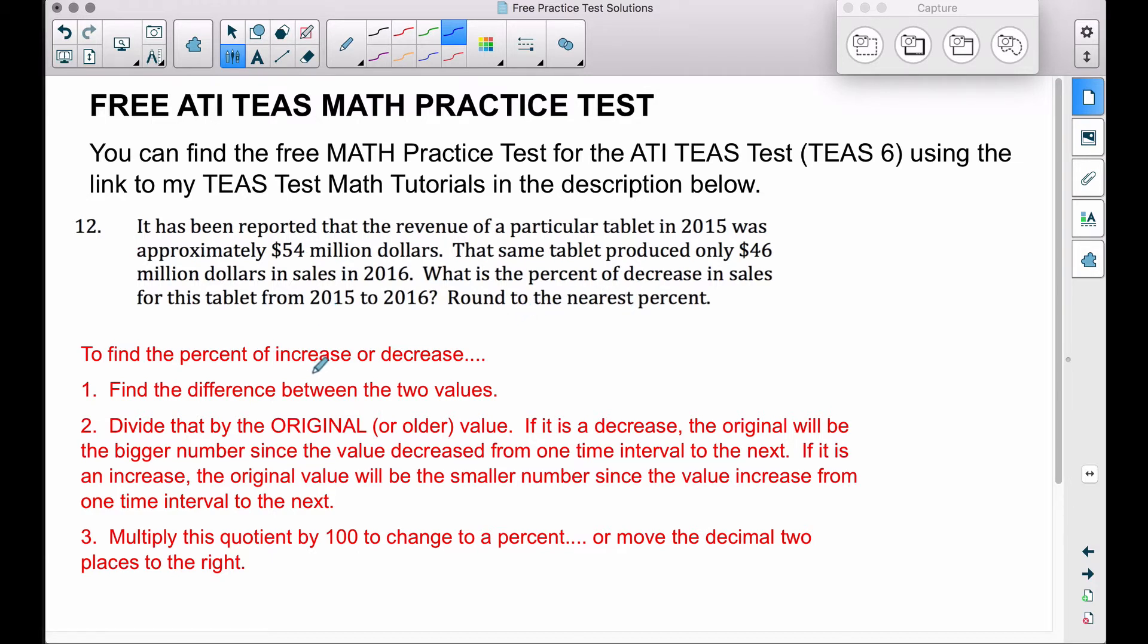The general idea for percent of increase or decrease problems works the same way. The first thing you want to do is find the difference between the two values. The two values we have here are $54 million and $46 million.